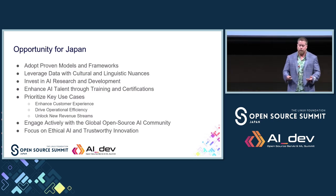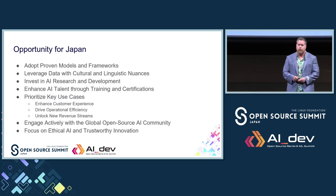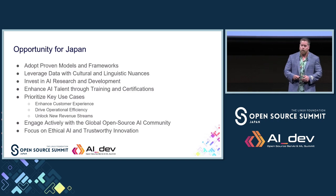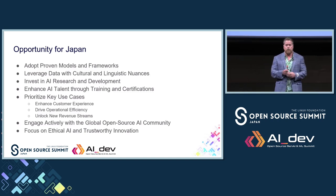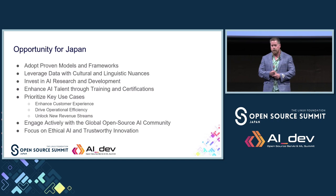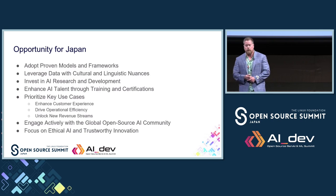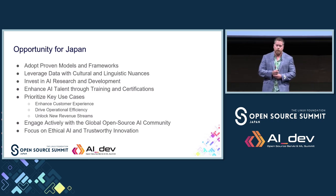I would recommend Japanese organizations to invest in local AI research. There's a lot of research happening in Silicon Valley and a prominent community in Paris, but I wouldn't allow those communities to dictate the future of your needs with AI. Invest locally, and build up your talent through training and certifications to get your organizations ready for the next generation of AI-based technologies in the enterprise.